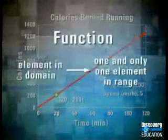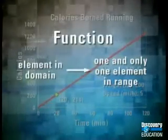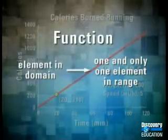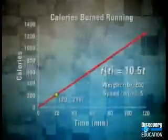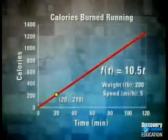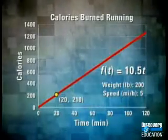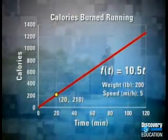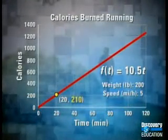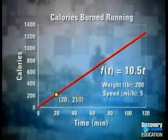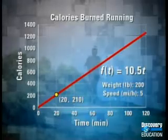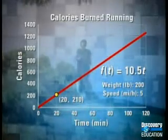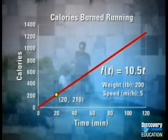For a relation to be a function, each input value must yield one and only one output value. In this calorie relation, using a value of 20 for T gives us only one answer for F of T: 210.